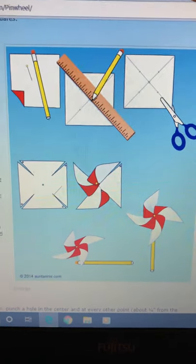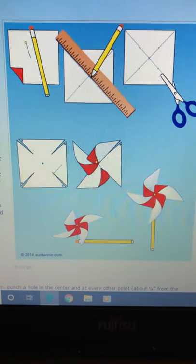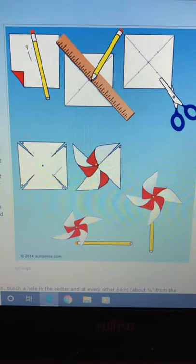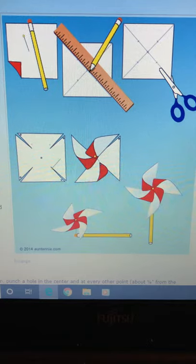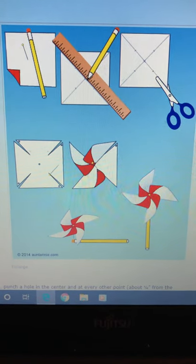For this lesson you will definitely need a grown-up to help you. You are going to need a pin, a pencil, a ruler, a pair of scissors, a straw, some sellotape, and you will definitely need a square piece of paper.